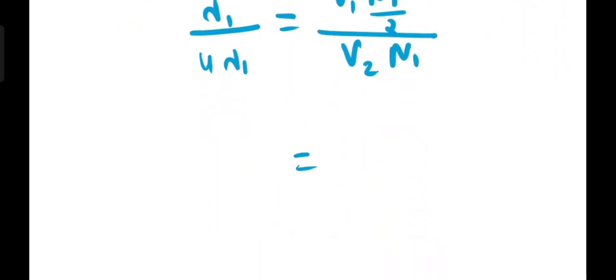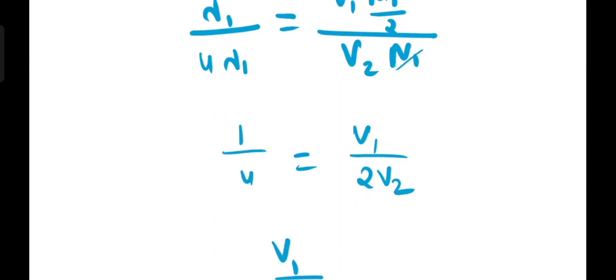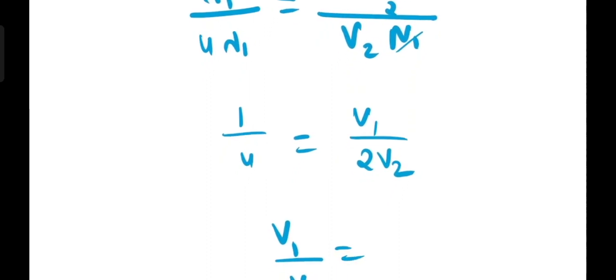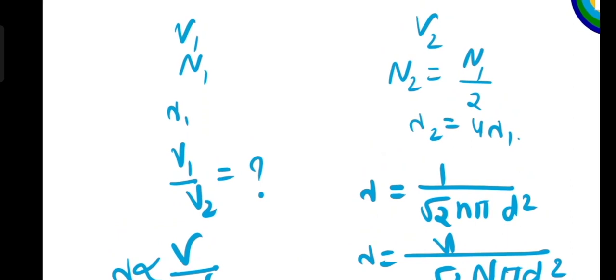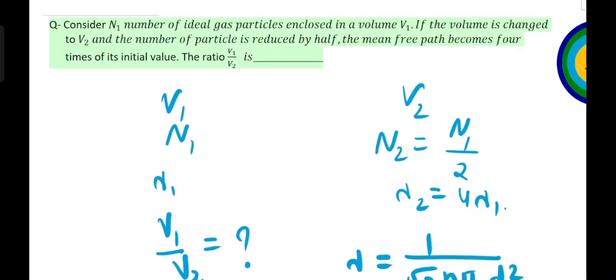Cancelling N1 from numerator and denominator, we get lambda1 by 4 lambda1 equals V1 by 2V2. Solving this gives V1 by V2 equals 0.5. So our ratio V1 by V2 is 0.5.